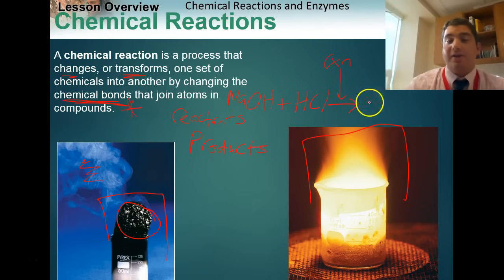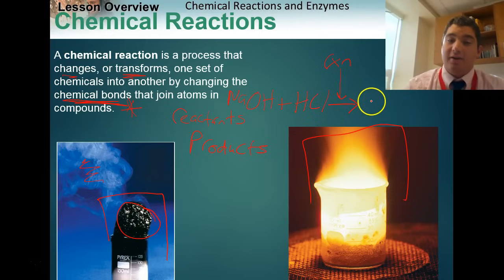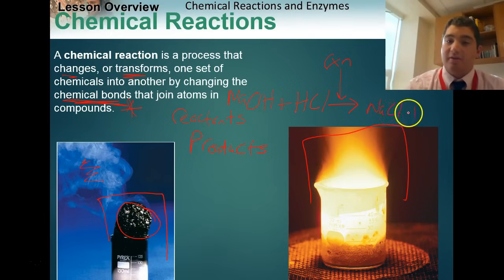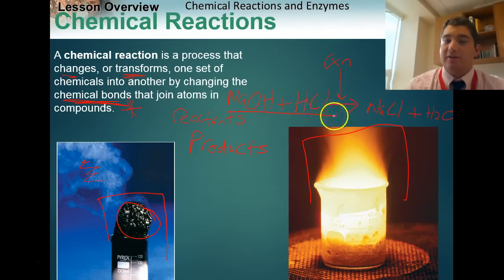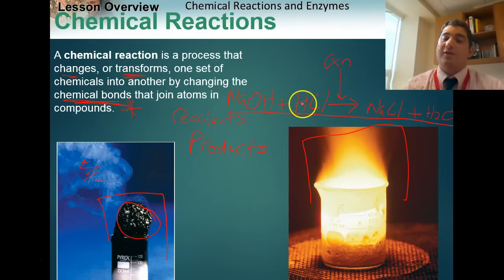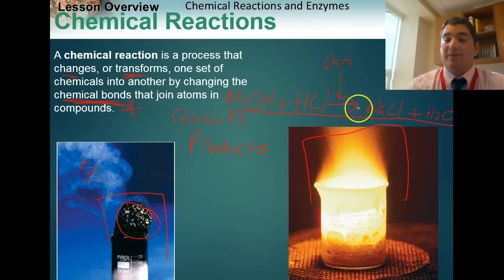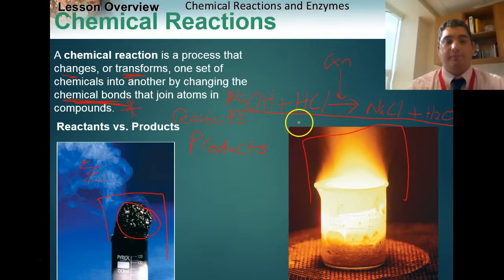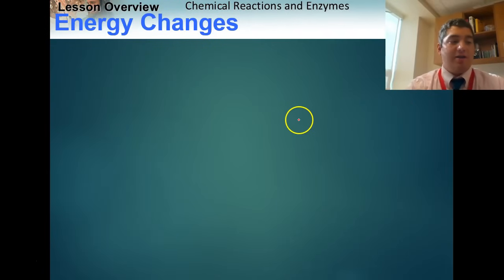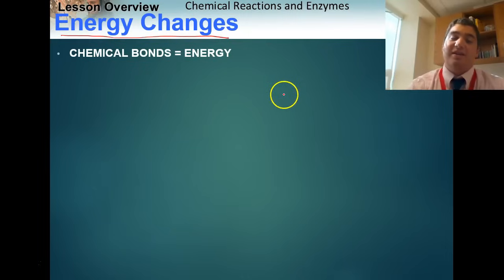After the chemical reaction we're no longer going to have sodium hydroxide and hydrochloric acid — we are going to get NaCl, which is salt, and H₂O. So in this reaction we start with two reactants, a chemical reaction happens, and we get two new products. Whenever you see an arrow, you know it's a chemical reaction.